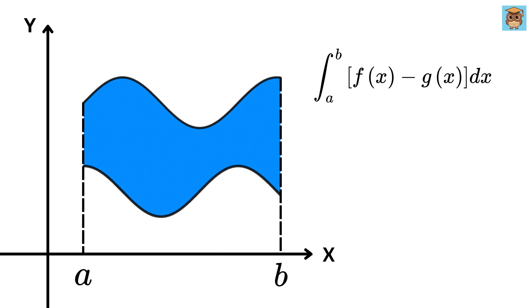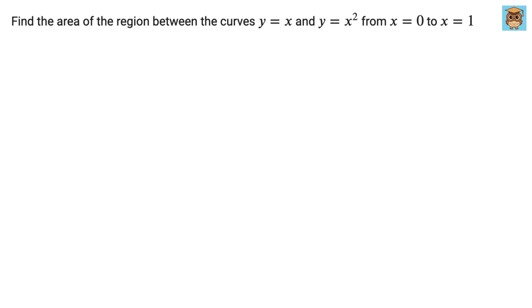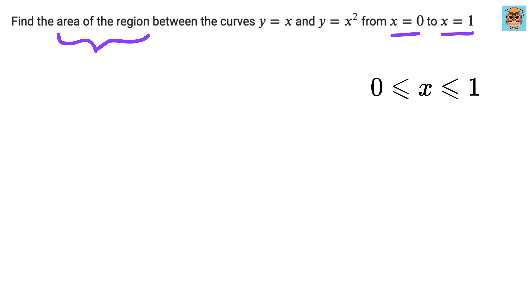So to find the area between two curves, we take the integral of the top function minus the bottom function. Let's look at a few examples. Let's say we have two curves, y equals x and y equals x squared, and we want to find the area between them from x equals 0 to x equals 1. Before we jump into calculations, we need to carefully decide which function is on the top and which one is on the bottom. For small values of x between 0 and 1, x squared is always smaller than x.